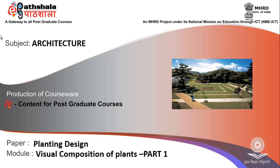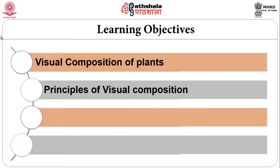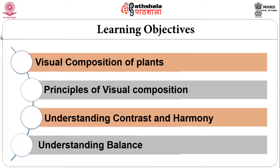We shall see this module under four objectives. First, we would see what it means by the visual composition of plants. Then we would see the principles of visual composition, and also understand a few of these principles like contrast and harmony, as well as balance — how to balance using plants — we would see them in detail.